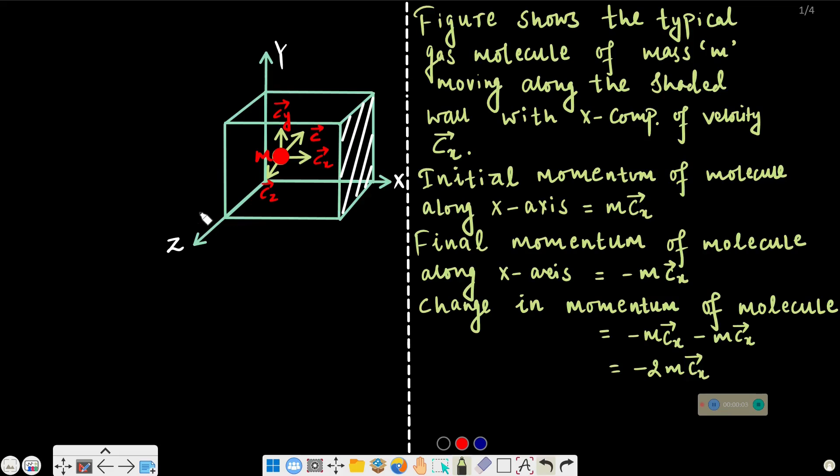Hello dear students, in today's video I am using kinetic theory of gas. In this video, I am deriving the pressure expression for a container which is simply P equals 1/3 rho mean square speed, or P equals 1/3 rho c² mean.